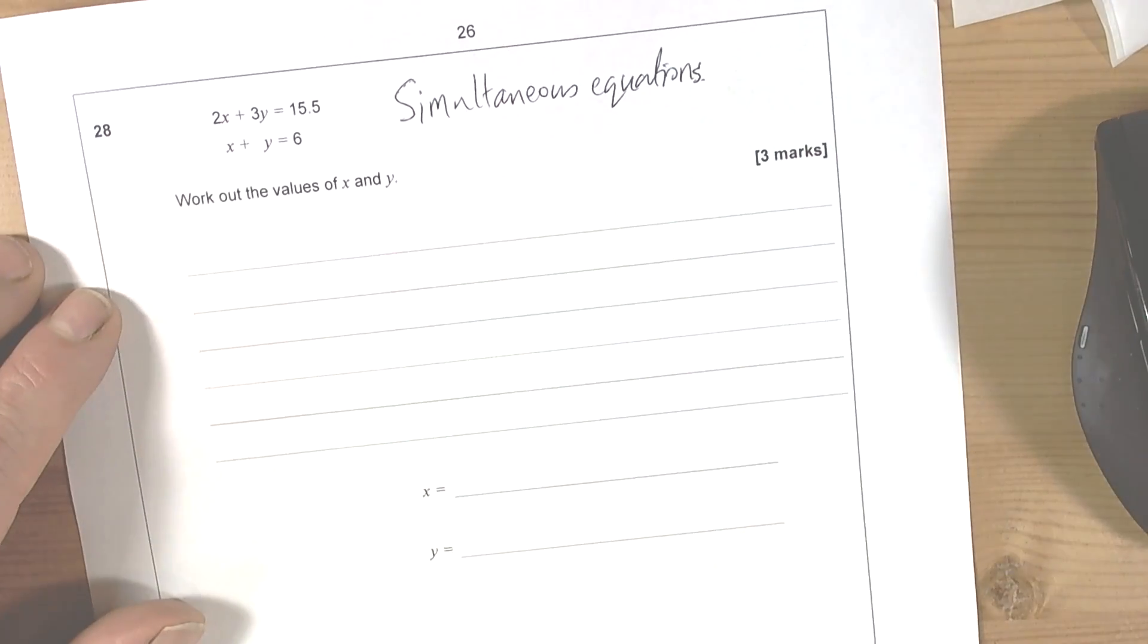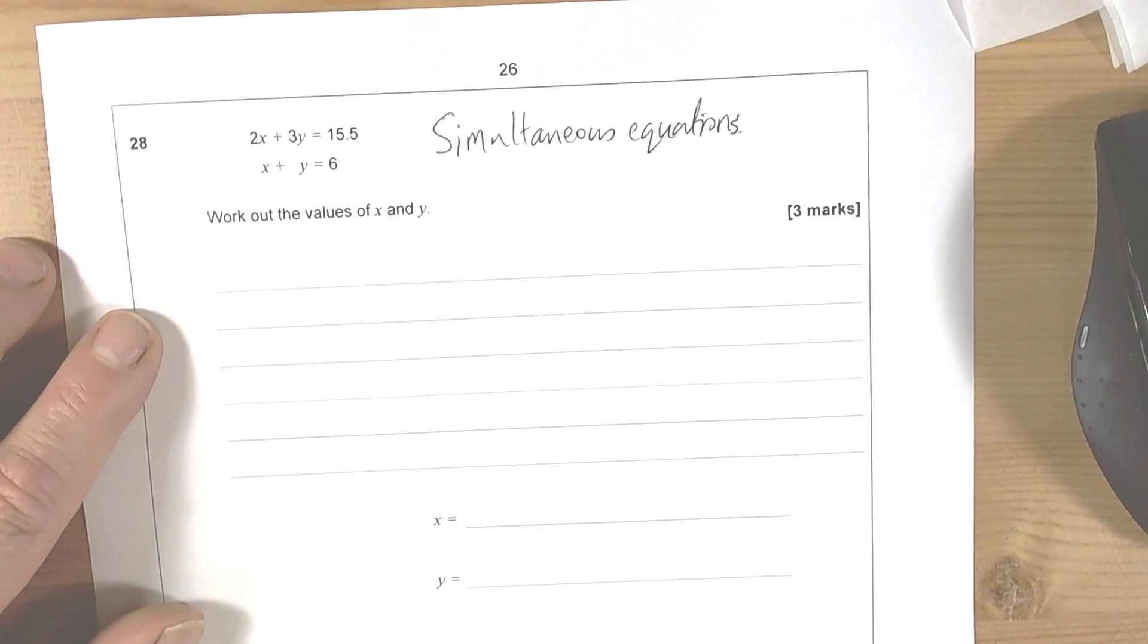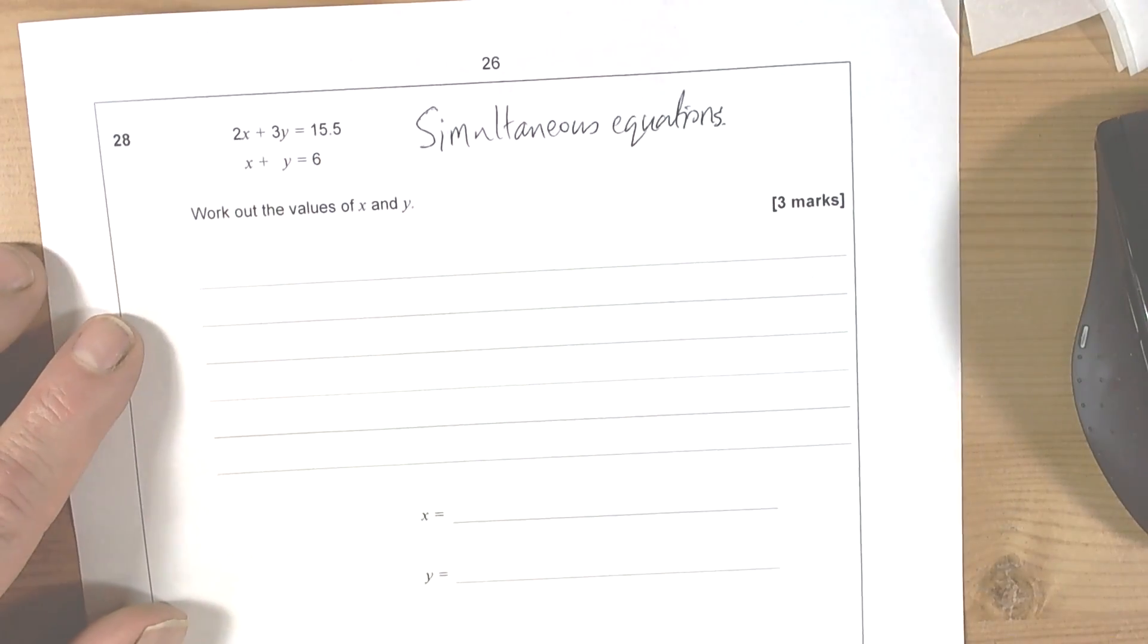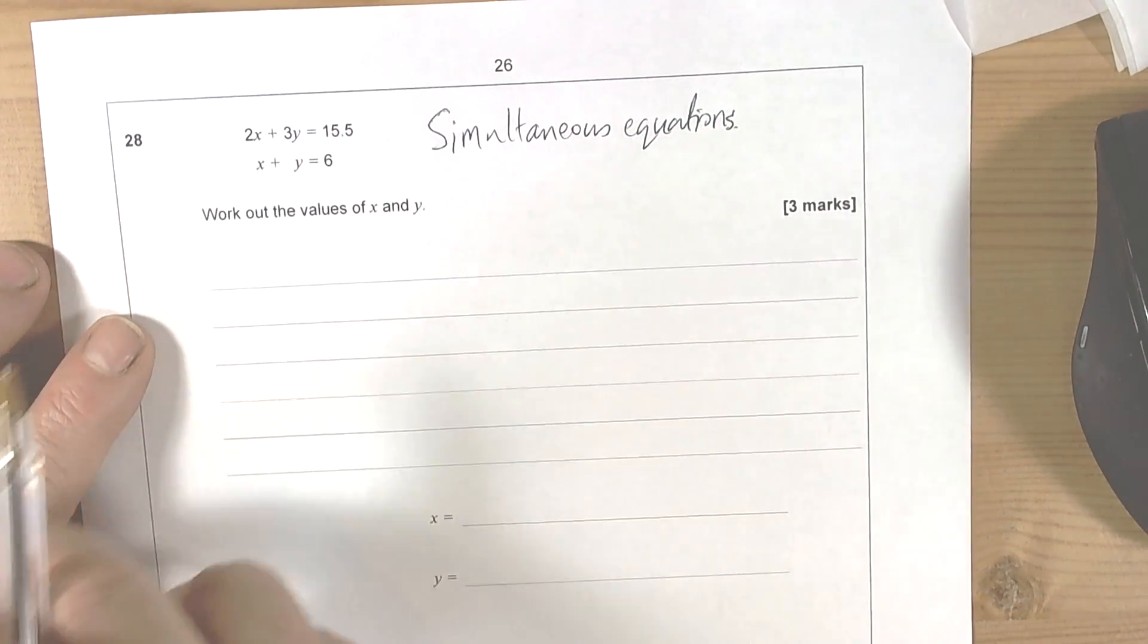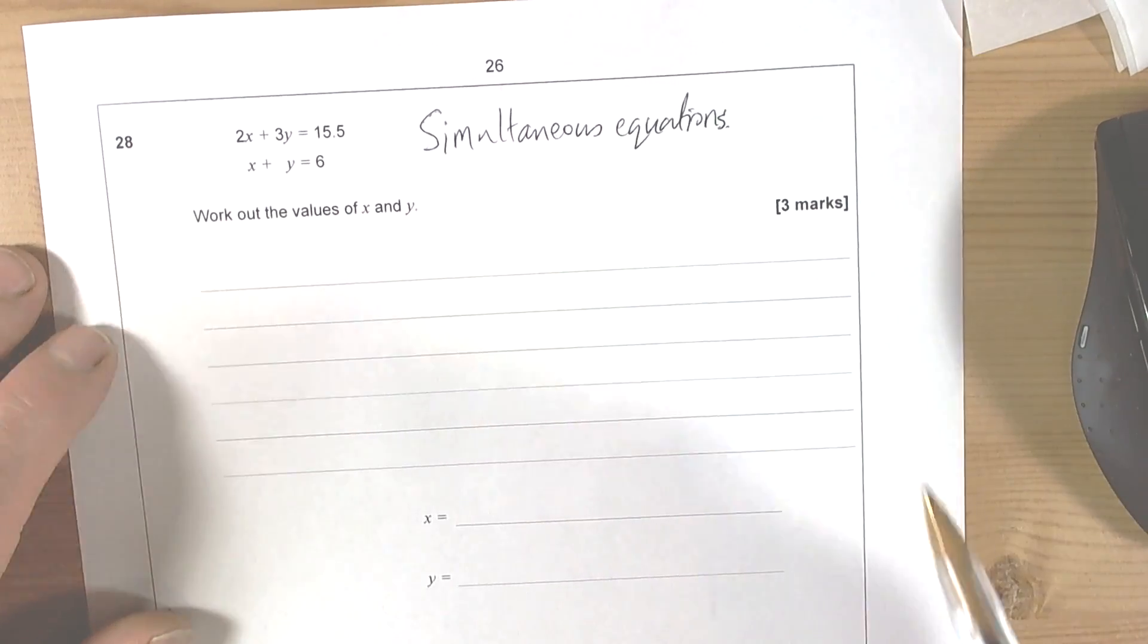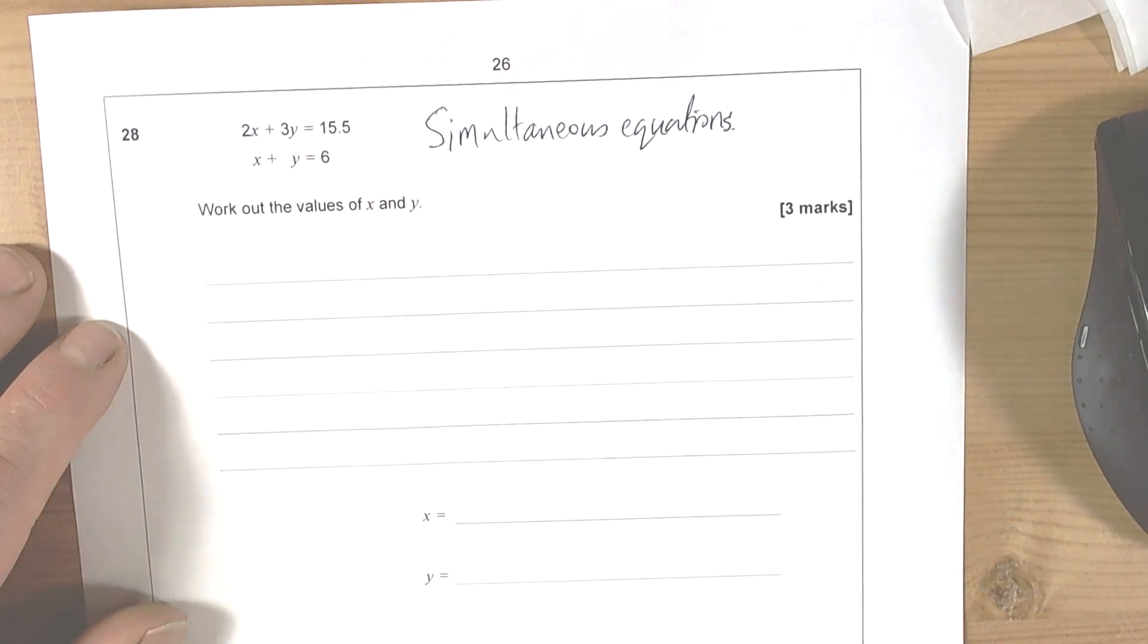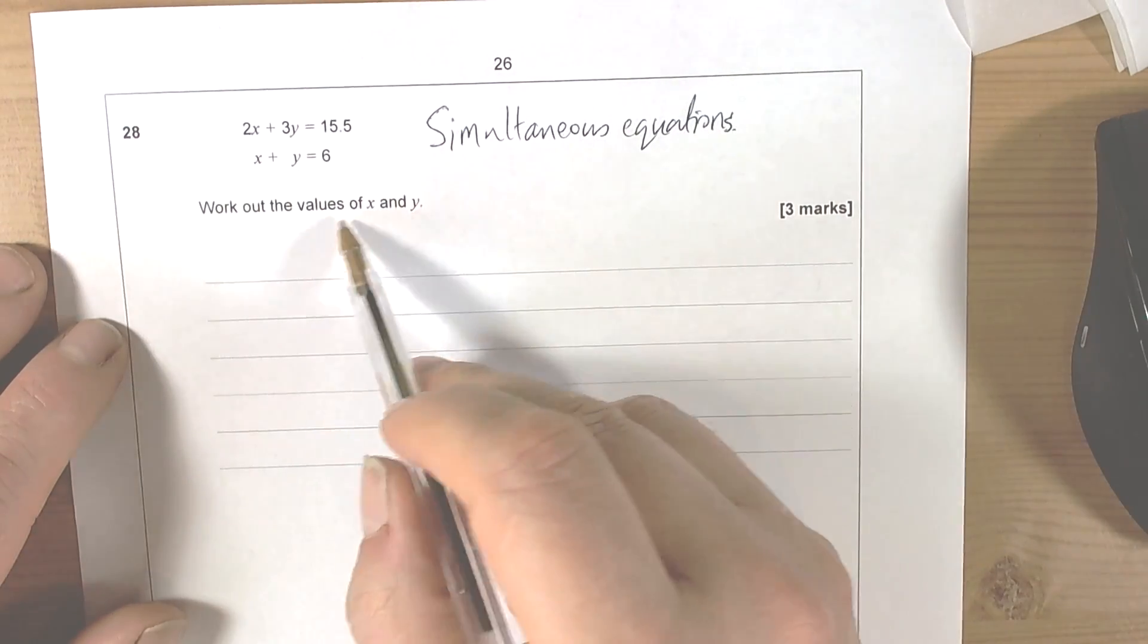What we recognize with simultaneous equations is we've got to do some subtractions or additions or multiplications—do something with these equations so we can get the situation where when we add or subtract new equations, one of the letters cancels out and disappears to leave us with one letter to solve. We can't solve equations with two letters where we've just got one equation; that's why we've got two of them here. They're simultaneous. So it says work out these values.